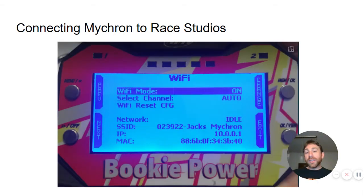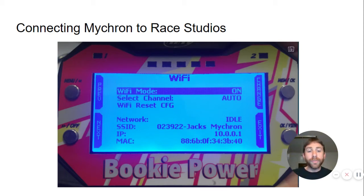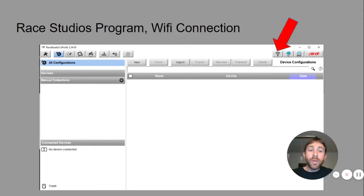Once you've accessed the Wi-Fi menu, you need to make sure the Wi-Fi mode on your Micron is on. As you can see on my Micron it is turned on, so this one is ready to go. Once you do that you can set your Micron down, go back to your computer and open up RayStudio 3.